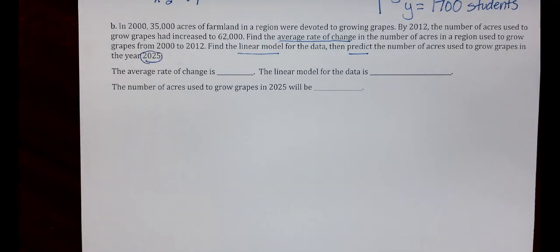We're still doing the same three things: finding the average rate of change, which is the slope; the linear model, which is the equation; and predicting, which allows us to plug in and find the number of acres used to grow grapes in the future, 2025.